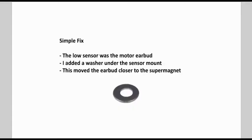It was a simple fix. The low sensor was the sensor that was monitoring the motor RPM. It was the earbud. So basically what I did is I just added a washer into the center sensor mount. One washer was enough. It moved the earbud closer to the super magnet and we got a nice strong signal as we'll see in the little short video coming up.